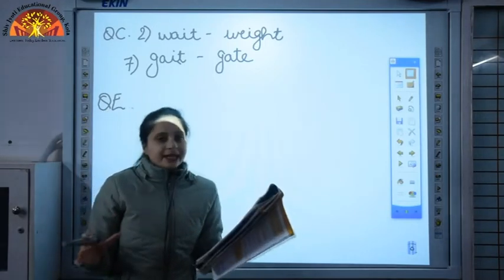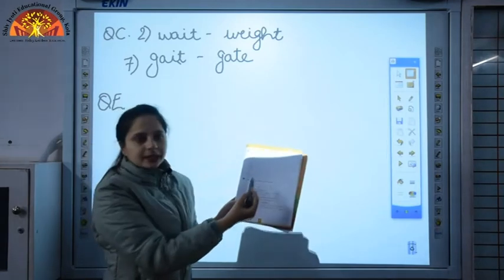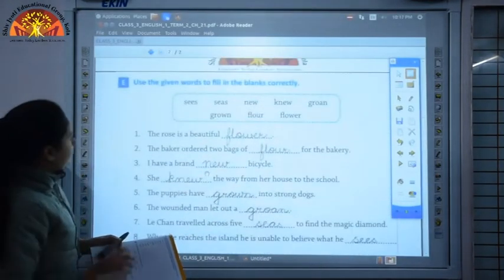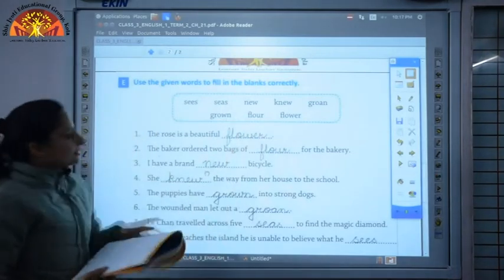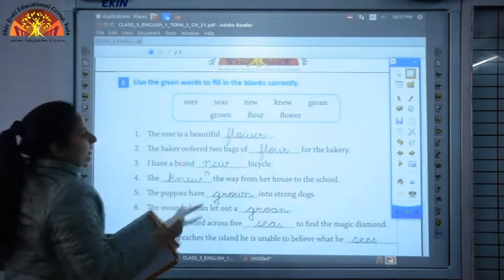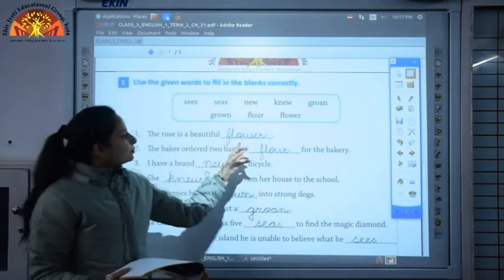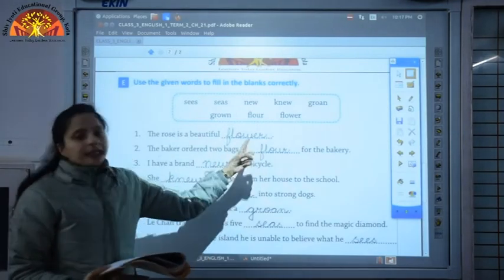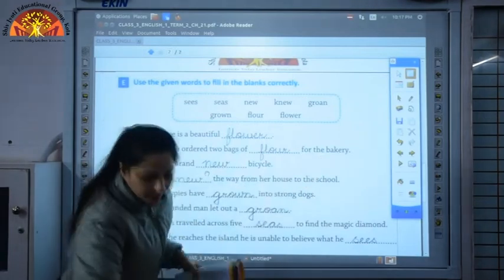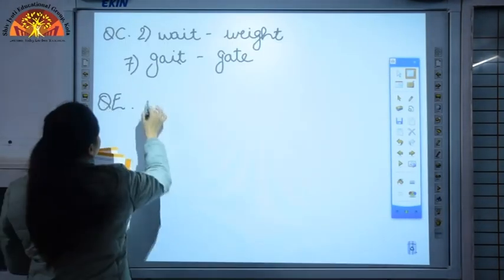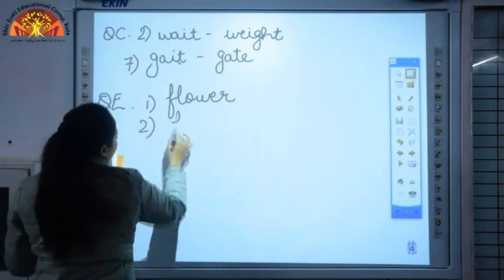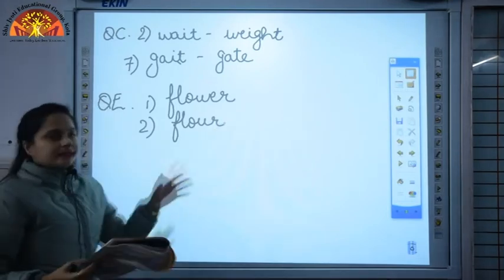Now we'll discuss question number E. You have to use the given words to fill in the blanks correctly. You have been given the words in the grid, then you have to choose the correct word and fill in the blank. I'll discuss the first and second. The rose is a beautiful, now over here we know that rose is a flower. So the correct word will be flower, F-L-O-W-E-R. And second, the baker ordered two bags of flour for the bakery. The first one will be flower and the second one will be flour. The sound is the same but the meaning and the spelling is different.